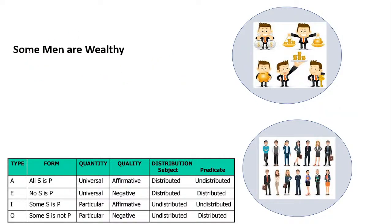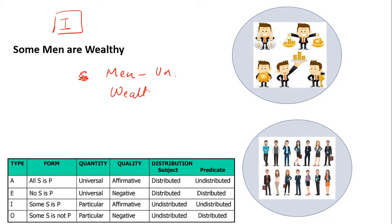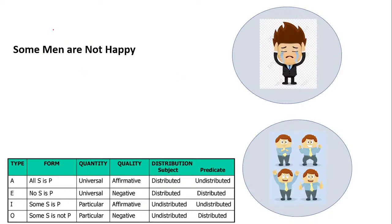For 'Some men are wealthy' (type I): since we are saying 'some men,' not all men, the subject 'men' is undistributed. And 'wealthy' is also undistributed because we are not claiming all wealthy people are men. For 'Some men are not happy' (type O): 'men' is undistributed because some men are happy as well. But 'happy' is distributed, because the negation applies to the entire predicate class.